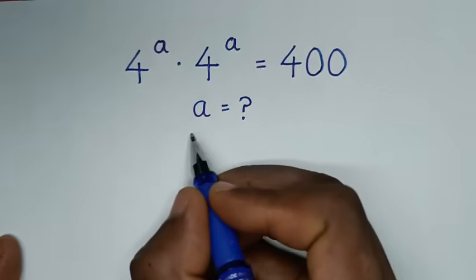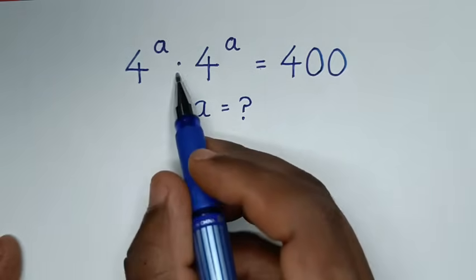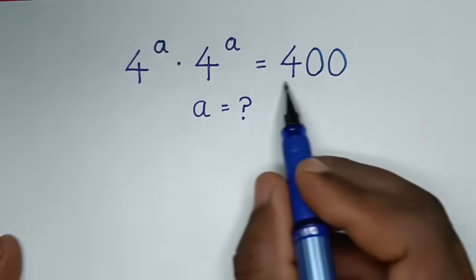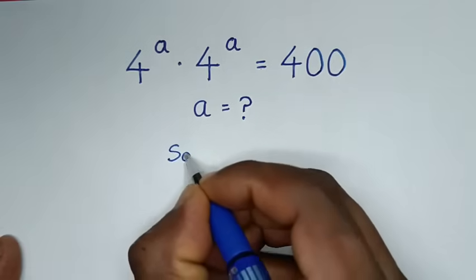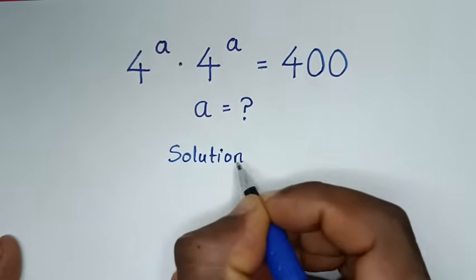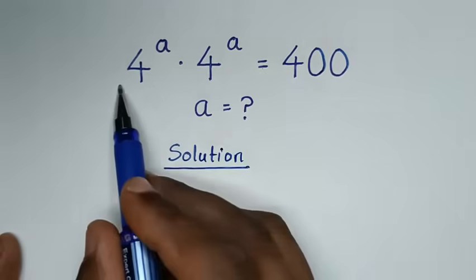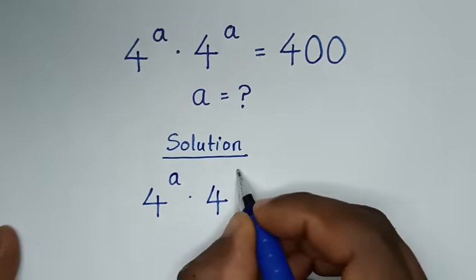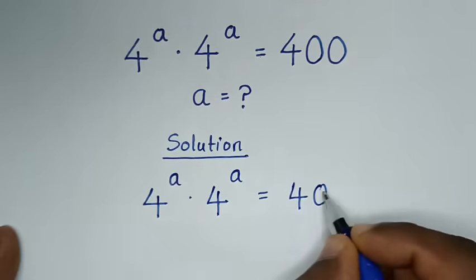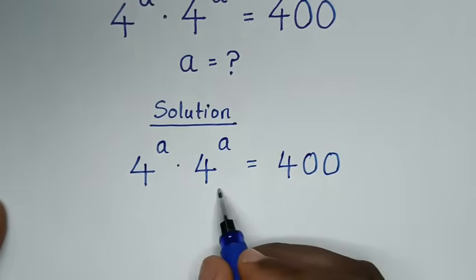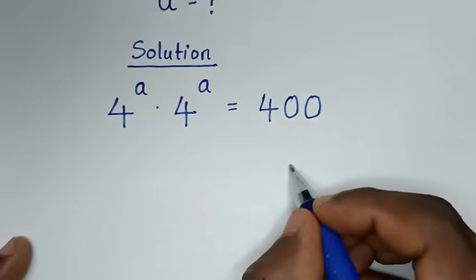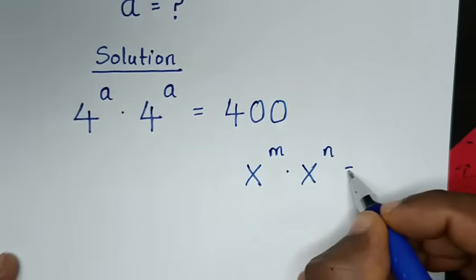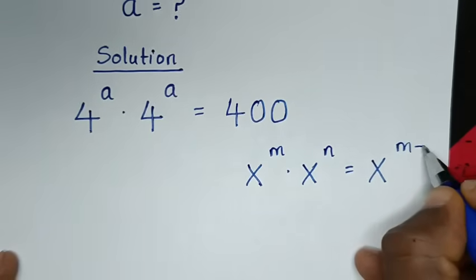Hello, you are welcome to solve this math problem which is 4 power of a times 4 power of a is equal to 400, to find the value of a from this equation. From this problem, this part is in the form of the rule which is x power of m times x power of n, which is equal to x power of m plus n.